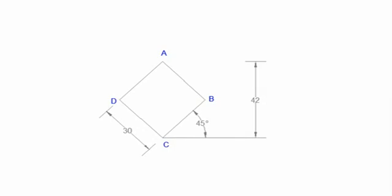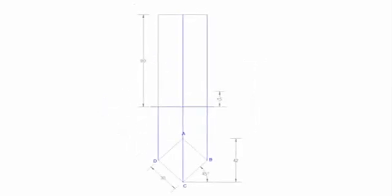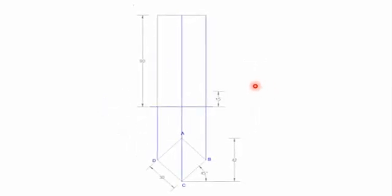So as usual we shall start with the construction lines and we shall draw a square in this orientation such that the diagonal is vertical. And it is good habit to actually name your points. You'll also realize that the diagonal is 42 millimeters and that is going to be very handy as we go along.